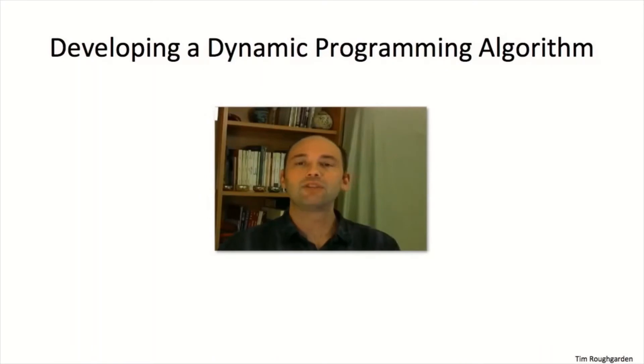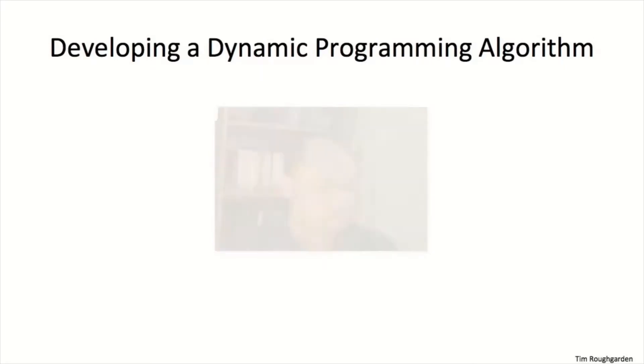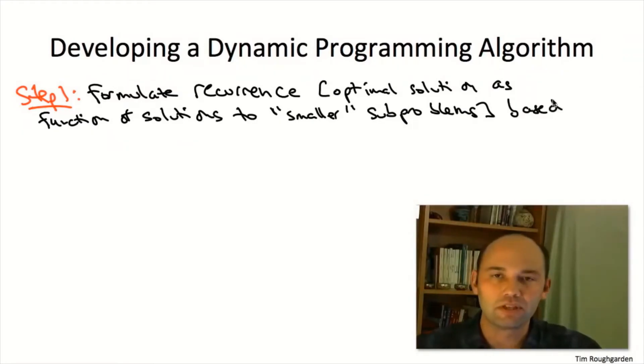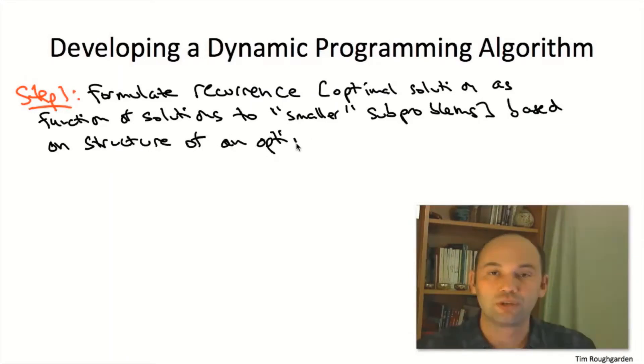Let's now execute the recipe for developing a dynamic programming algorithm. The key to any dynamic programming solution is to figure out what is the right set of subproblems. We're going to arrive at the smaller subproblems for the knapsack problem by doing a thought experiment about the optimal solution, understanding what it has to look like in terms of solutions to smaller subproblems. The deliverable will be a recurrence, a formula which tells us how the optimal value of one problem depends on the value of smaller subproblems.